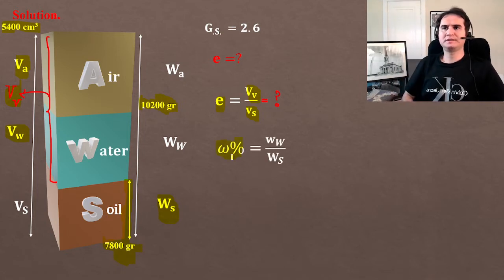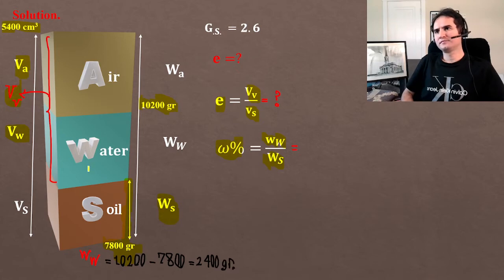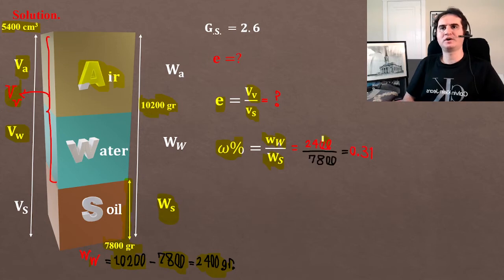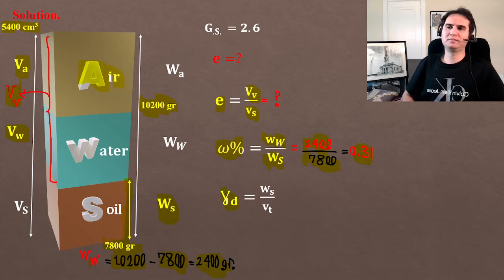First of all, moisture content is weight of water over weight of soil. If we subtract the total weight (10200) minus weight of soil (7800), the rest is weight of water, because we neglect the weight of air. So if you divide weight of water over weight of soil, it gives us a moisture content of 31%.